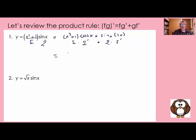Now the next step is simplifying — that's usually where a lot of work is, but this one's not bad. This is x squared plus 1 times cosine x, plus — normally we write the polynomial in front — 2x sine of x. There's the derivative y prime.